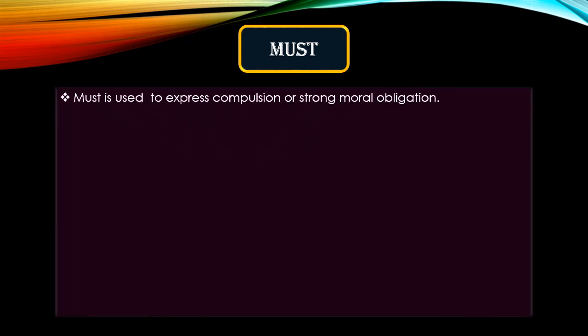Now we will learn the uses of 'must.' Must is used to express compulsion or strong moral obligation. The difference between 'should' and 'must' is that 'should' denotes moral obligation where not following is up to you, but 'must' implies a strong obligation with consequences — like 'Cars must not be parked in front of the gate,' otherwise your car will be fined or towed.